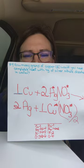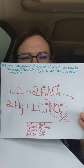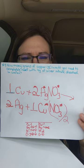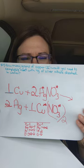This is problem number four, the math part. Going back to the equation, it says: how many grams of copper would you need to completely react with four grams of silver nitrate dissolved in water? I always start with what I know. I know that I have four grams of silver nitrate. We know that silver nitrate is AgNO3 from the equation that we just made.